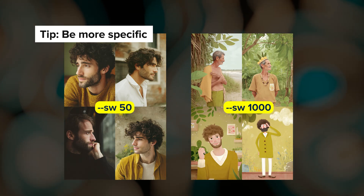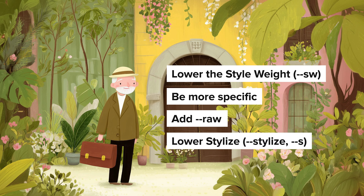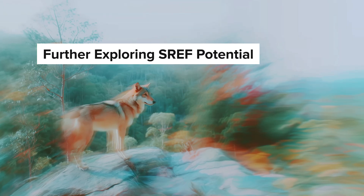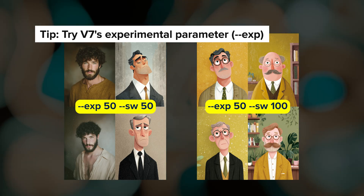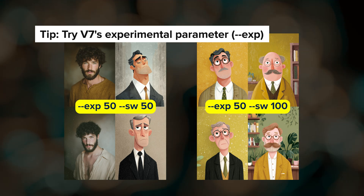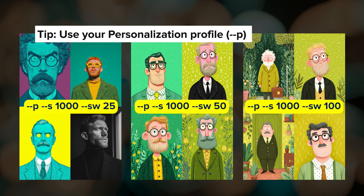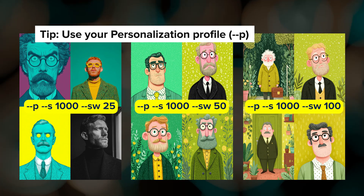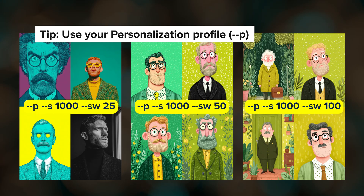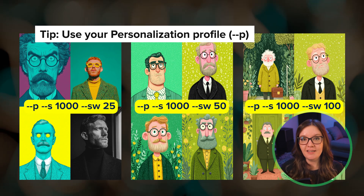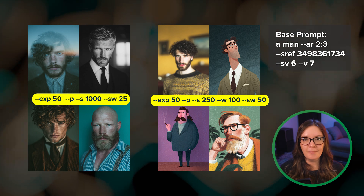In addition to getting more specific with the prompt and adjusting the style weight, you can try adding --raw to improve prompt adherence, or lower the stylize value to reduce Midjourney's default aesthetic styling. Style references can also interact with other parameters to create interesting variations. For example, adding the exp parameter can introduce more detail and affect colors. Here I've added an exp value of 50 with two different style weights — the color palette shifts toward more muted and mustardy tones and desaturates even more when I lower the style weight. The important thing to understand is that all of these parameters work together with your prompt text to influence your final output.